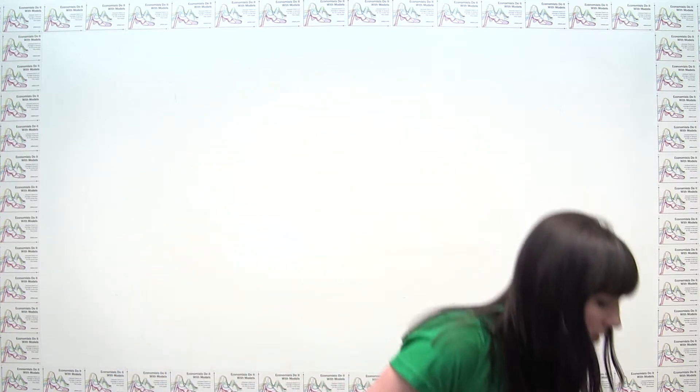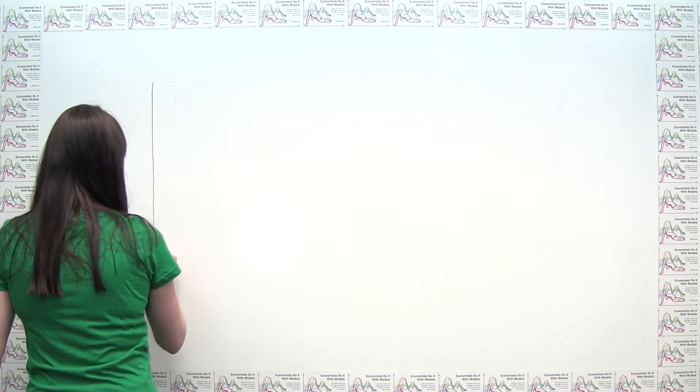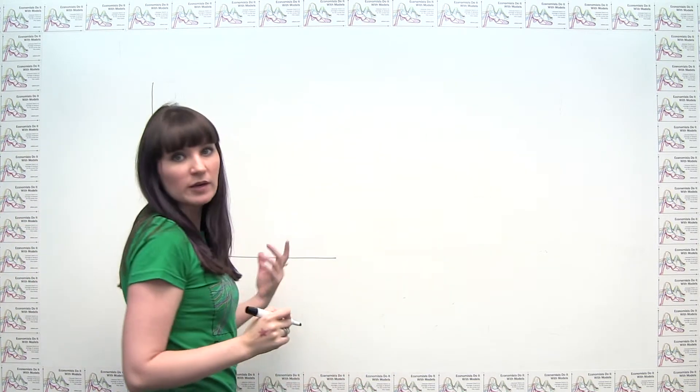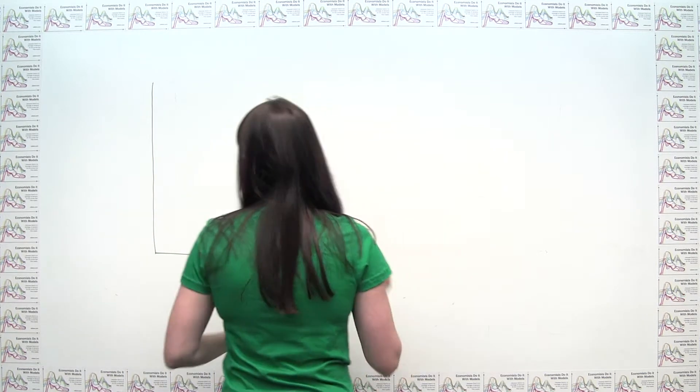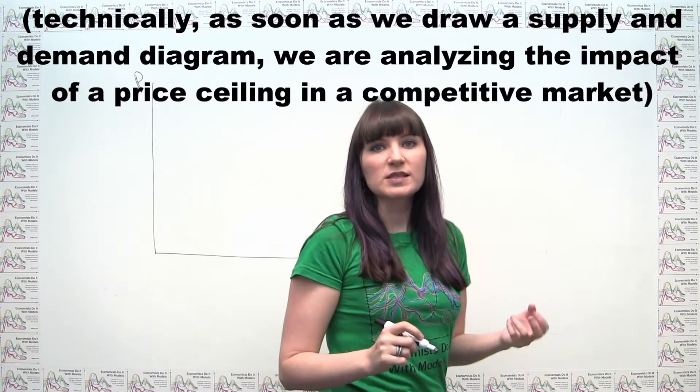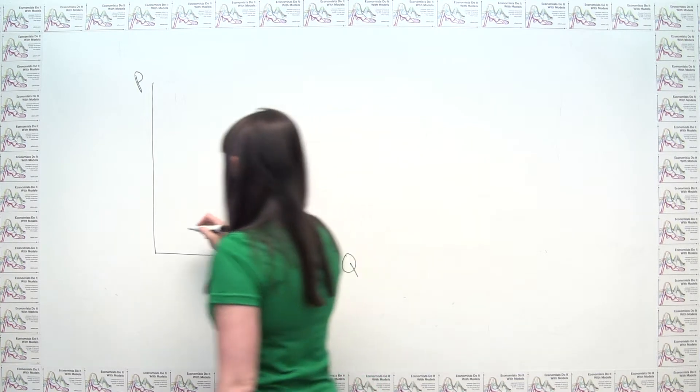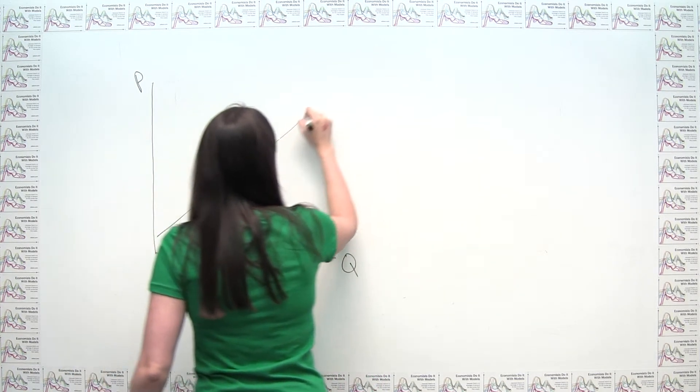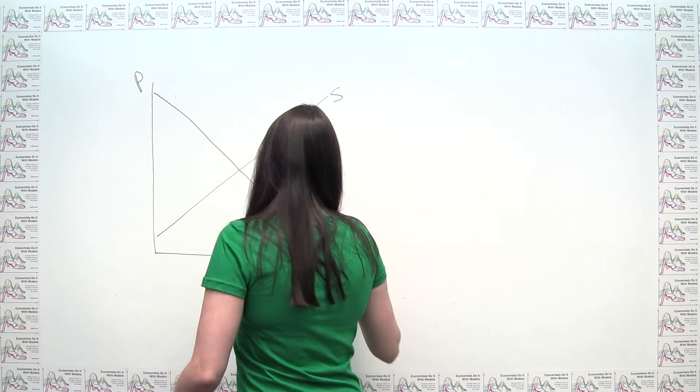So we can think about this, and to analyze what's going on here, we need to start with a basic supply and demand diagram. We're thinking about market supply and market demand, so we want to put a capital Q on the horizontal axis and a P on the vertical axis. We weren't told anything specific about what supply or demand looked like, so the best we could do is draw our typical upward sloping supply curve and downward sloping demand curve here.